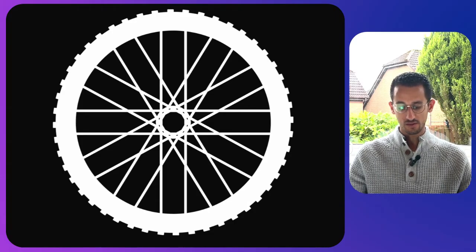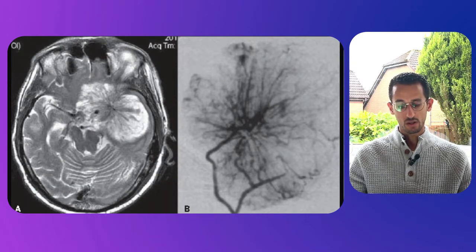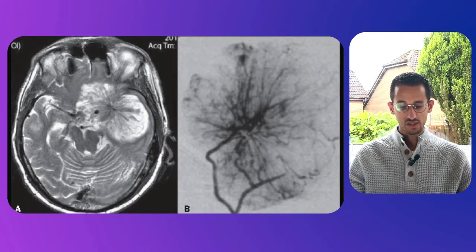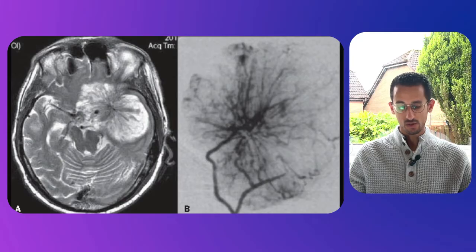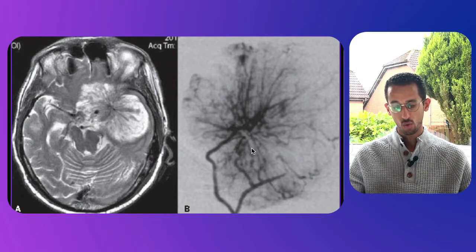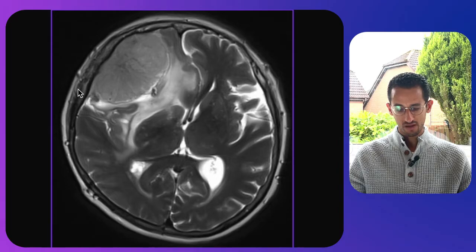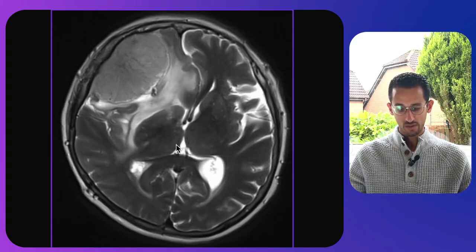Moving to the next one — this is a spoke wheel sign. On the MRI scan on the left, there is a large lesion with spoke wheel appearances, which is characteristic for meningiomas. On the right, the angiogram shows the blush or increased supply into the meningioma. Here you can see a similar spoke wheel appearance in another meningioma — extra-axial with this spoke-like pattern within it.